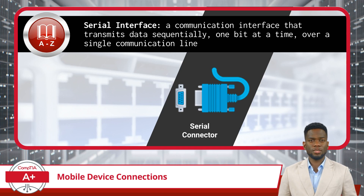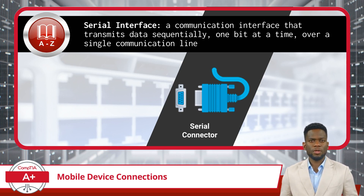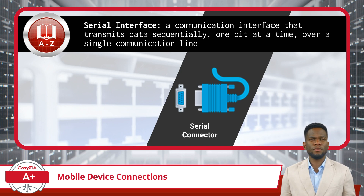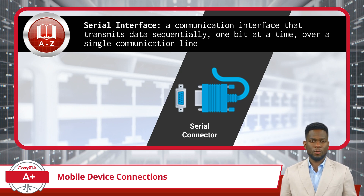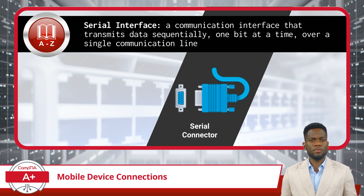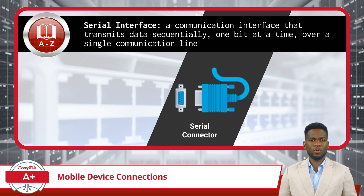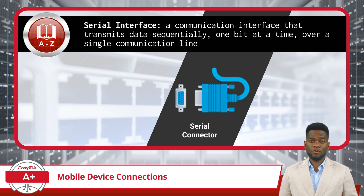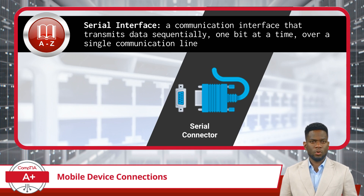Next, we have Serial Interfaces. These are a type of communication interface that transmits data sequentially, one bit at a time, over a single communication line. While they may seem primitive compared to newer technologies, their role in networking is still important. They are primarily used to connect to the console ports of network devices like switches and routers, providing network administrators direct access to a device's operating system. By connecting a laptop to the console port of a network device with a serial cable, IT professionals can issue configuration commands directly to the device.